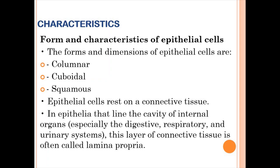The form and characteristics of epithelial tissues: epithelial cells can either be columnar, cuboidal, or squamous. We classify epithelial tissue based on the shape of their cells. If the cells appear more elongated than wide, those are columnar cells. If the width and height are the same, they are cuboidal. If the cells are flattened, they are squamous.